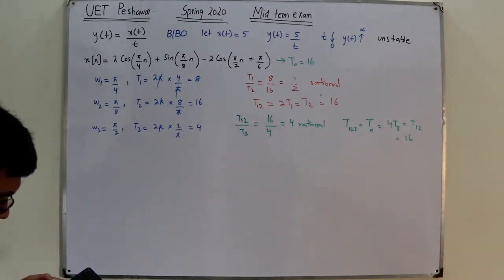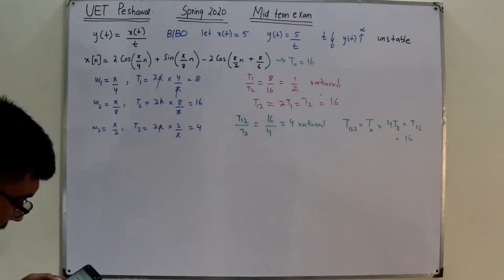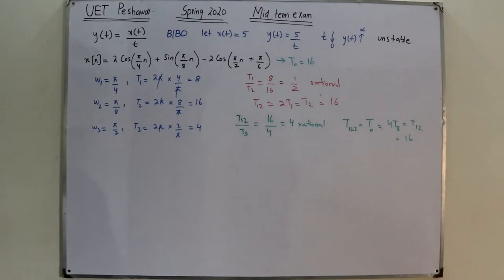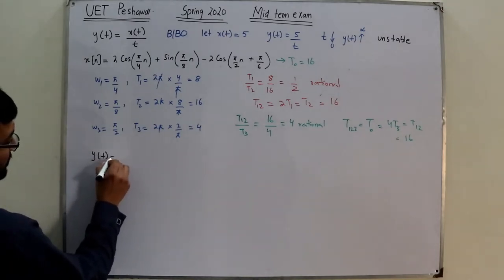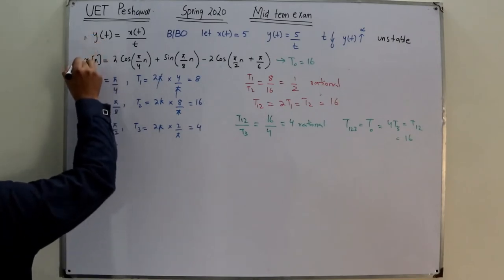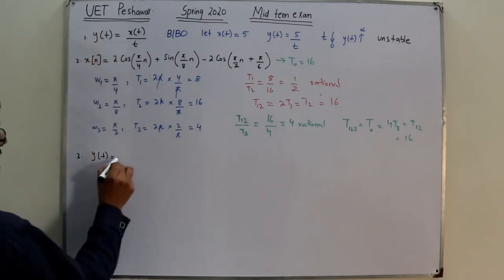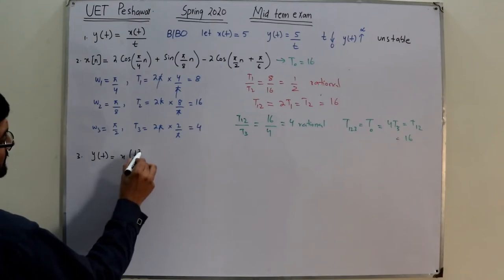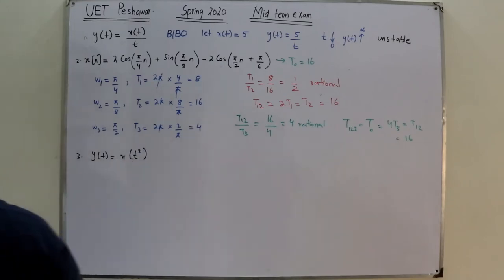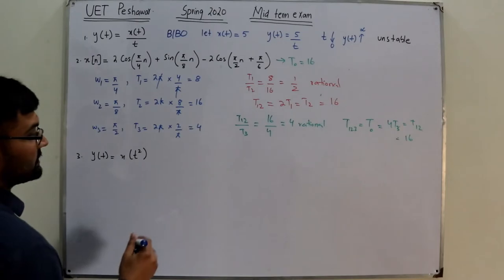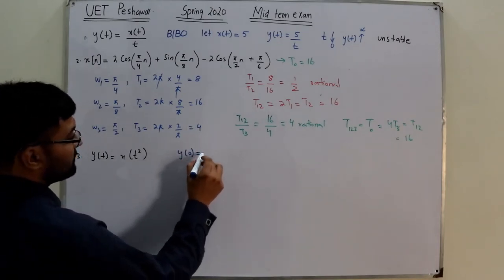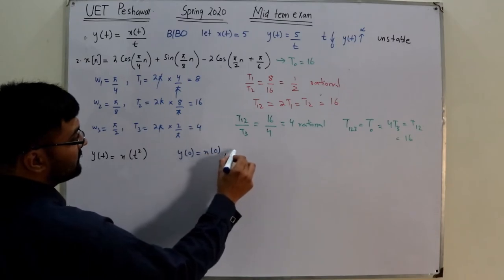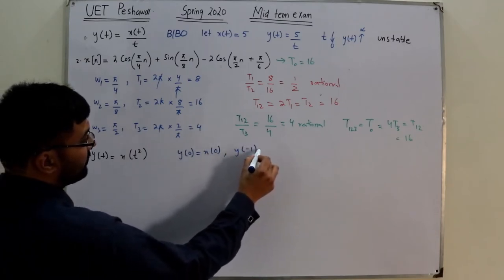Question 3: y(t) = x(t²). We check whether this is a memory-less or with-memory system. We evaluate y(0) = x(0) — that's fine — but then we check y(2) = x(4), which depends on a different time index.